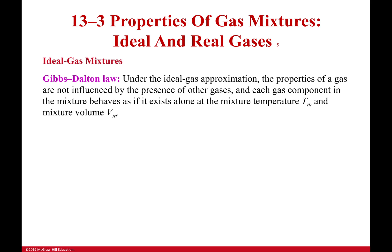So under the ideal gas approximation, properties of a gas are not influenced, that's a key detail here, not influenced by the presence of other gases. So just because they have half hydrogen, half oxygen, we're saying that they don't really interact with each other. They behave as if they were by themselves at the temperature of the mixture and the volume of the mixture.